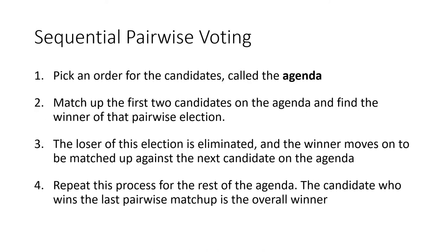In sequential pairwise voting, you pick an order for the candidates called the agenda, and you match up the first two candidates on the agenda and find the winner of that pairwise election. The loser is eliminated and the winner moves on to face the next candidate on the agenda. You repeat this process for the rest of the agenda, and at the end the candidate who is last person standing wins the overall election.